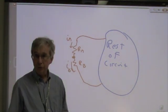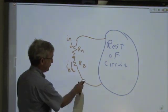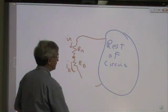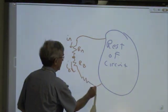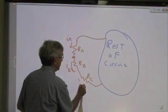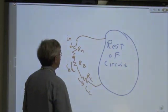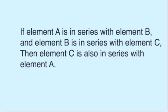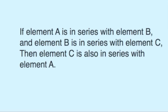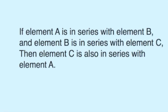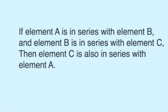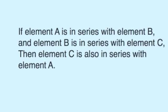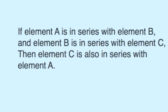Whatever current flows through RA by KCL has to flow through RB as well. One can have more than two things connected in series if we have a third resistor here, R sub C. Its current will be the same as IA and IB. So if element A is in series with element B, and element B is in series with element C, then element C is necessarily also in series with element A.